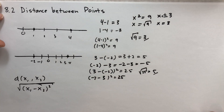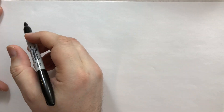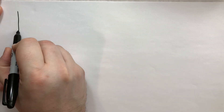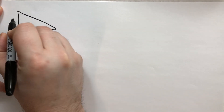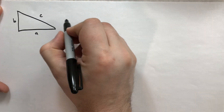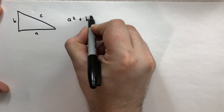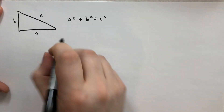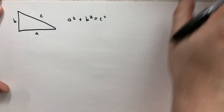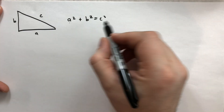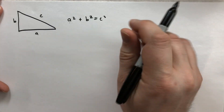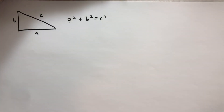This is good for calculating distances on lines, but we want to calculate distances on the plane. Let's remember that the Pythagorean theorem says: if we have a right triangle with sides a, b, and hypotenuse c, then a² + b² = c². Because we're talking distances, c must be positive — you can't have negative distances.